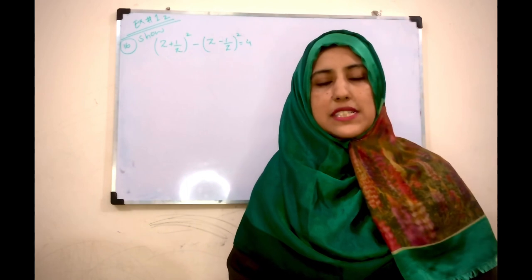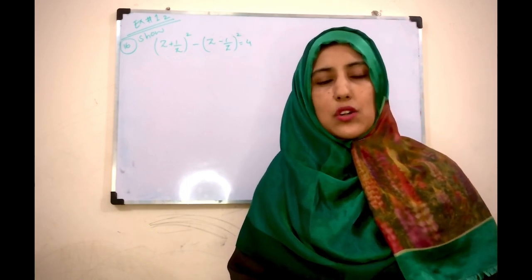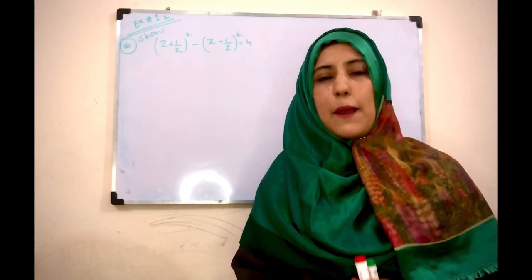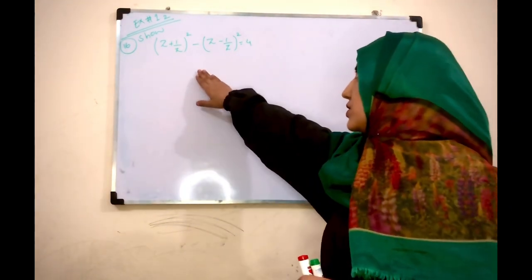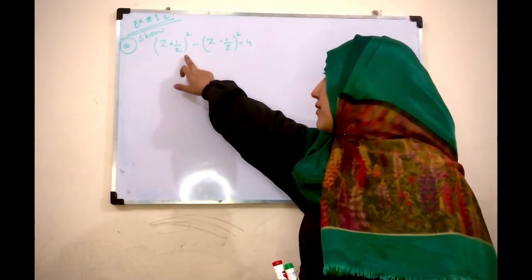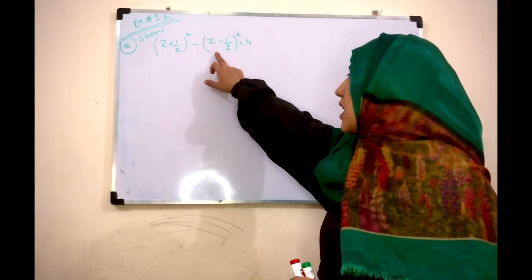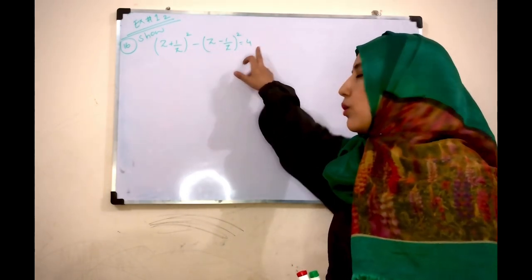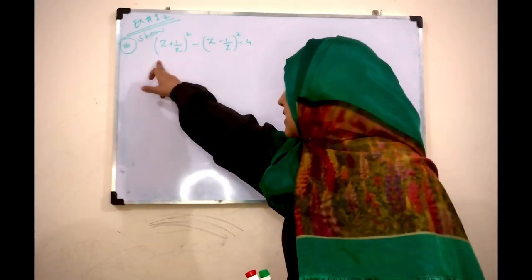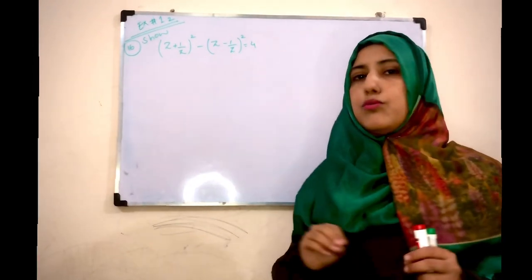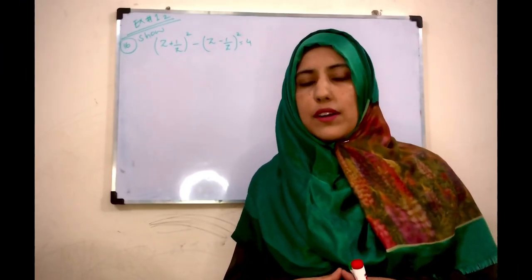Hi and assalamu alaikum, this is Maria, your math mentor. Welcome to my YouTube channel Math Breaker Students. I have this question: (z + 1/z)² minus (z - 1/z)² is equal to 4. You have to show this expression is equal to 4. This is a very important question.